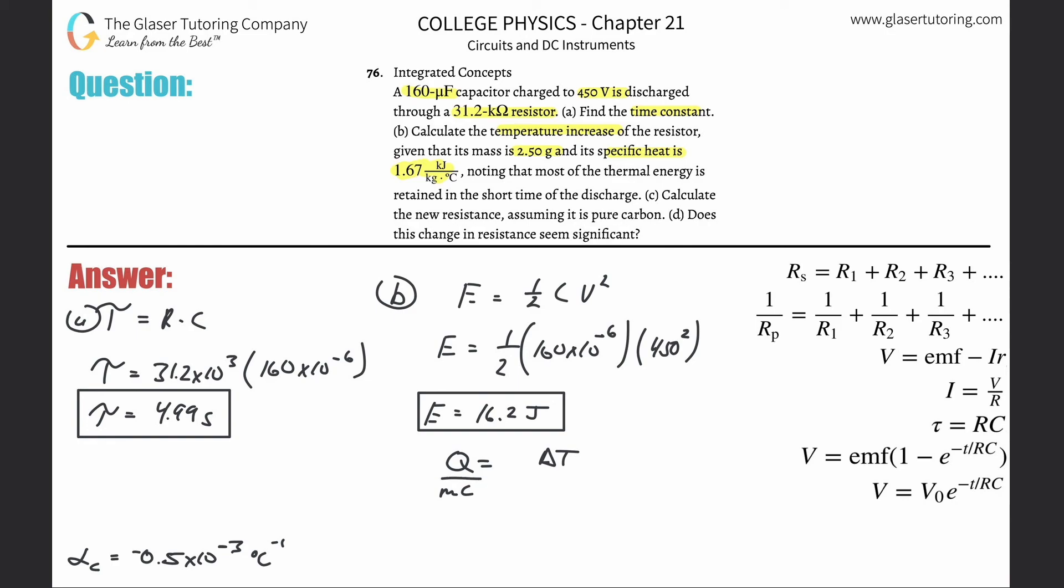So Q we just found, that's the energy, that's 16.2 joules. The mass, careful, we need that in kilograms, so this is 2.5 times 10 to the minus 3 kilograms. And we need this value in joules, so take it and multiply by 10 to the third. So this is 1.67 times 10 to the third, and that's equal to then delta T.